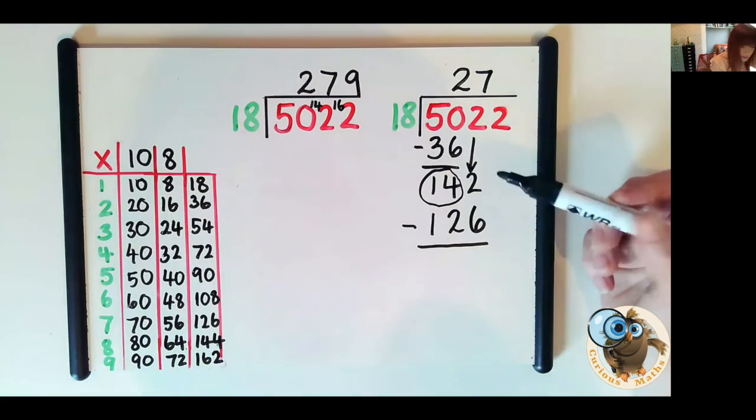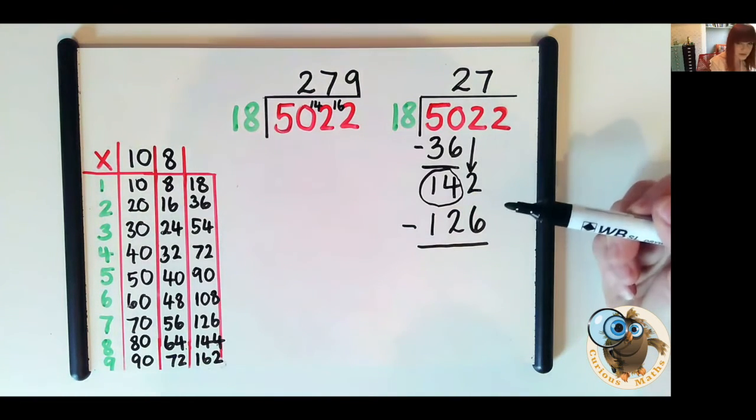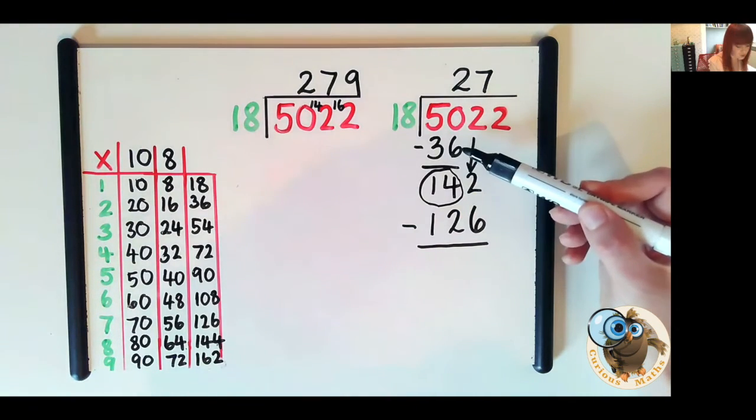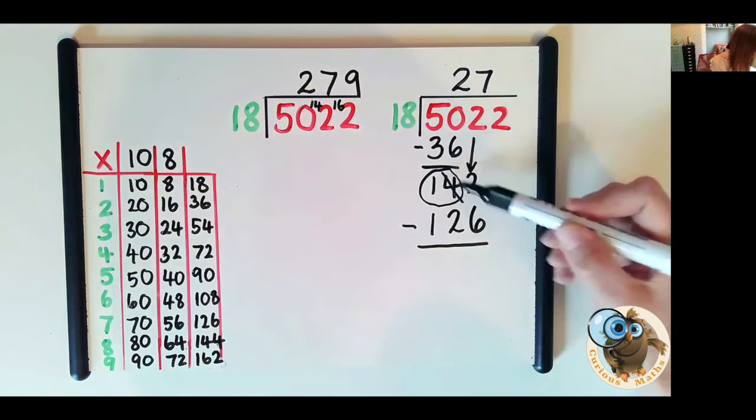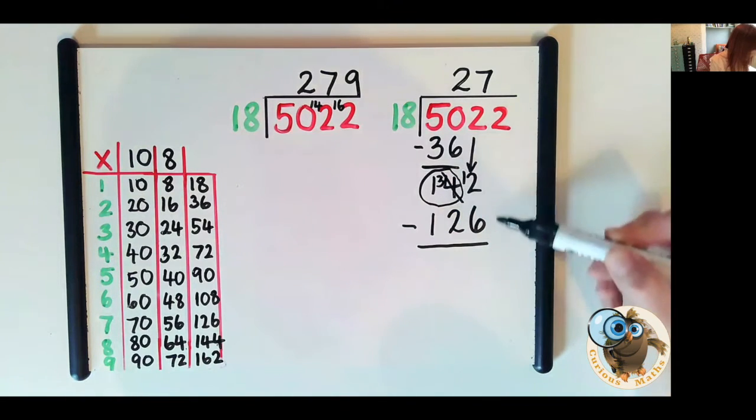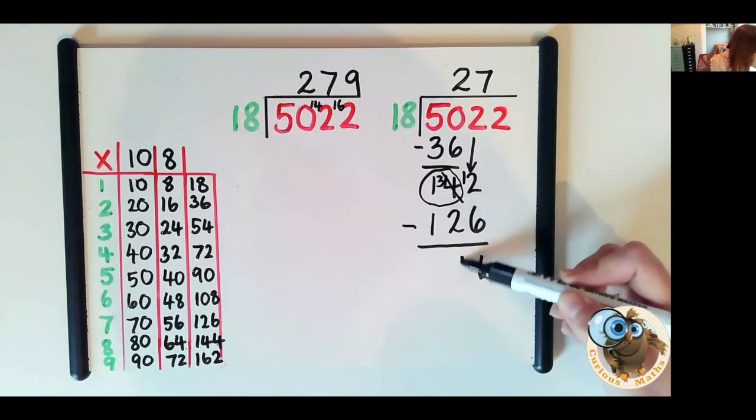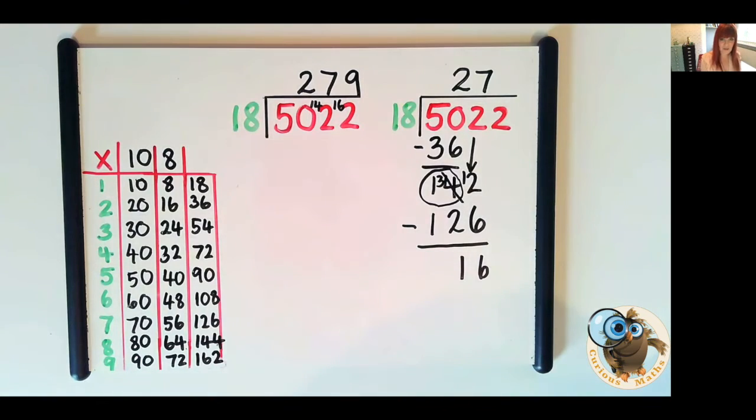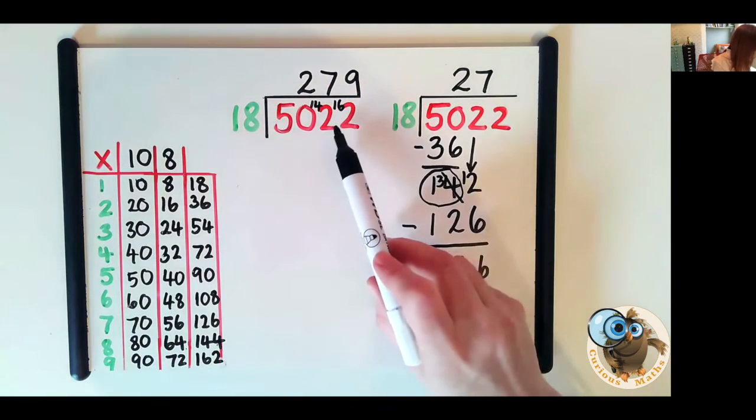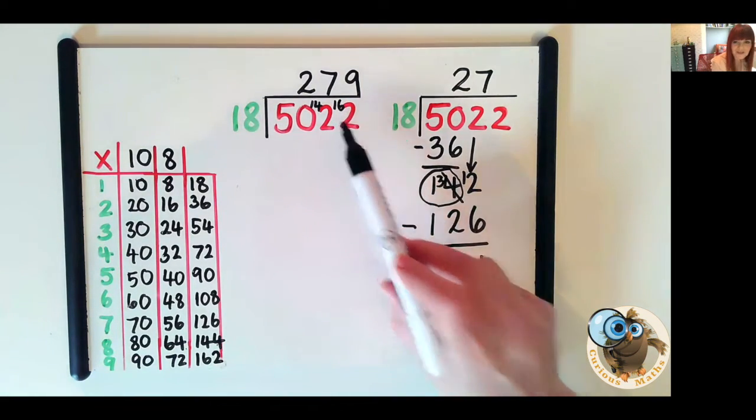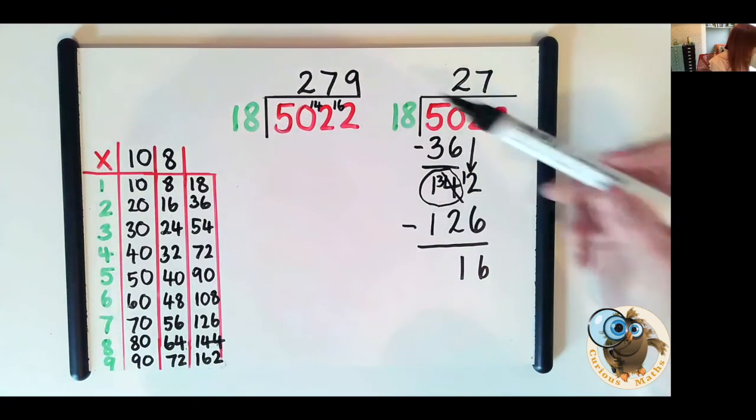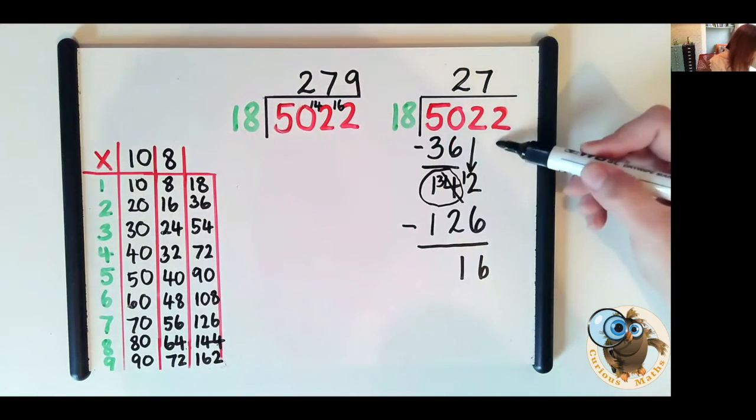So sometimes I use the formal method, sometimes I look at the number and see if I can do it in my head but let's just do it using the formal method. So here we have 16 remaining and look in our short division method there are 16 that were remaining and look we put it in front of the two to make 162.